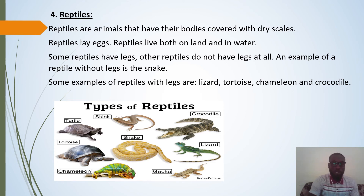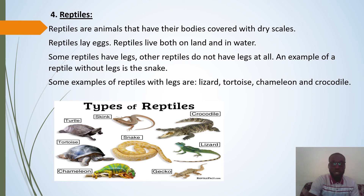The next category is reptiles. Reptiles are animals that have their bodies covered with dry scales. Reptiles lay eggs and live both on land and in water. Some reptiles have legs; others do not — an example of a reptile without legs is the snake. Some examples of reptiles are the lizard, tortoise, chameleon, crocodile, gecko, and turtle.